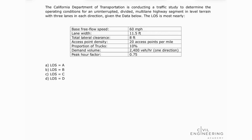Hello everyone, welcome back to Civil Engineering Academy. My name is Marina and today I'm going to be solving a problem for your PE transportation exam. This problem is about traffic capacity. There are equations and exhibits we'll need to reference, all found in our Highway Capacity Manual. These equations are not available in the NCEES reference handbook, so keep that in mind — whenever you have this type of problem, we need to use our Highway Capacity Manual.